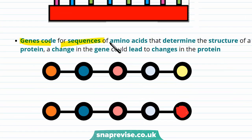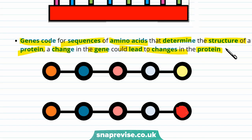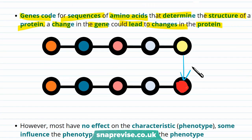Genes code for sequences of amino acids that determine the structure of a protein, and a change in the gene could lead to changes in the protein. So if there's been a mutation in an amino acid, that could lead to a change in the protein because it may affect the way the protein folds up. For example, if the protein was an enzyme, the enzyme might have a different active site and might not be able to carry out its job.